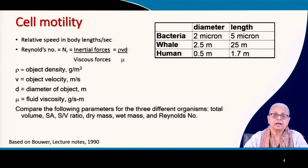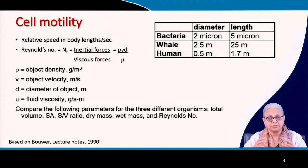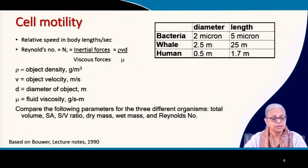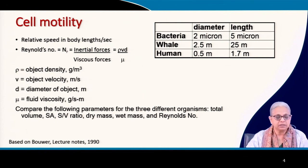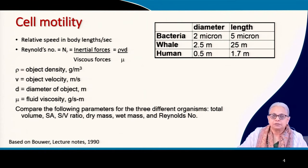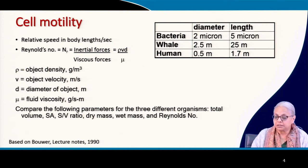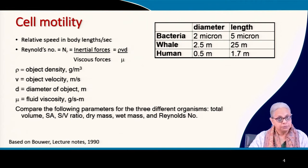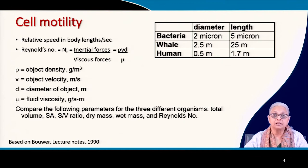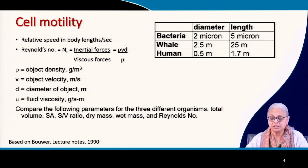Let us take a closer look at the motility of cells and how they move. We will take an engineering perspective on the way cells move in their environment. Here are a few important data points. Bacteria have a diameter of about 2 microns and a length of 5 microns. Whales are at the other end of the size spectrum — the blue whale has a diameter of about 2.5 meters and a length of about 25 meters.